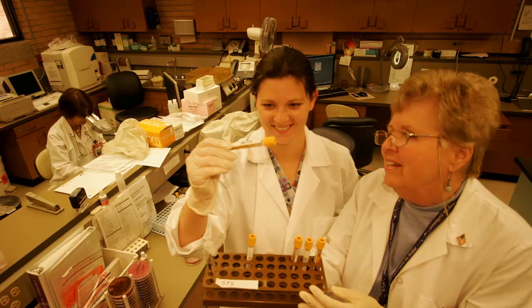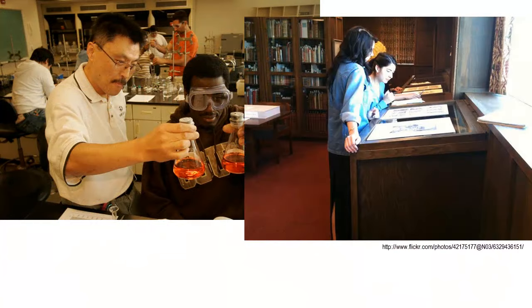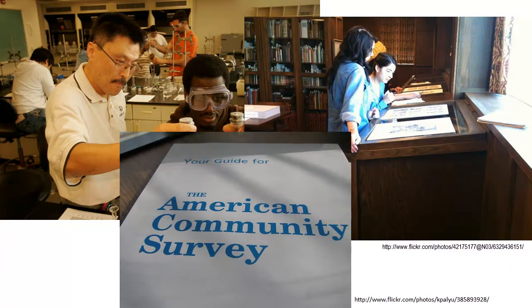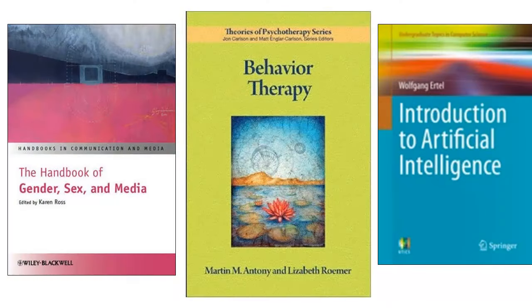Scholarly articles, depending on the researcher's field, present the results of experiments that were conducted, archival material or data that was analyzed, or surveys that were administered. Each scholarly article adds to and builds on the field's existing body of knowledge, which is what researchers in the field already know and agree upon as true. Books like your textbook collect that body of knowledge as it exists at a certain point in time.